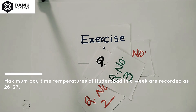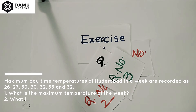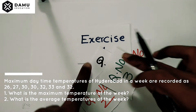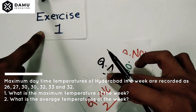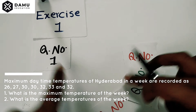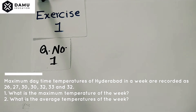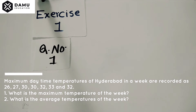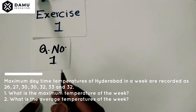Hello viewers, in this module we are going to discuss Exercise One, Question One. The question gives maximum daytime temperatures for a week from 26th February to 4th March 2011. The temperatures are recorded as follows.